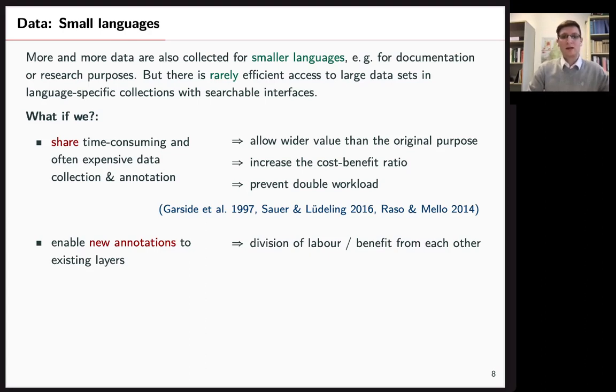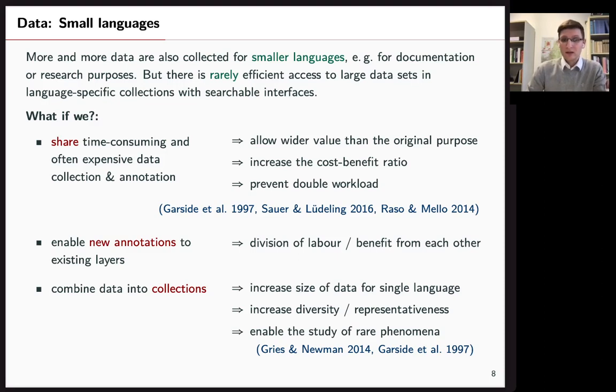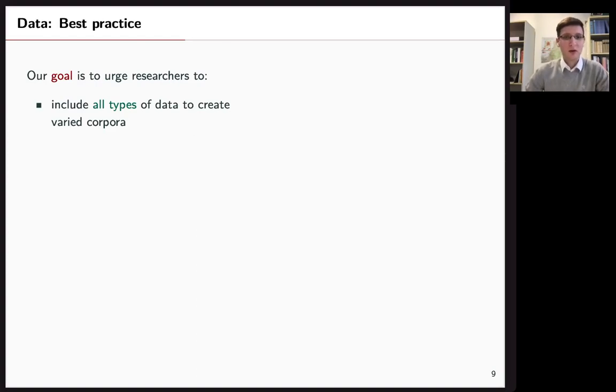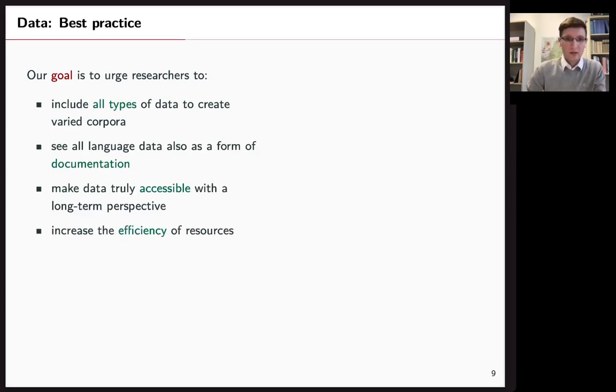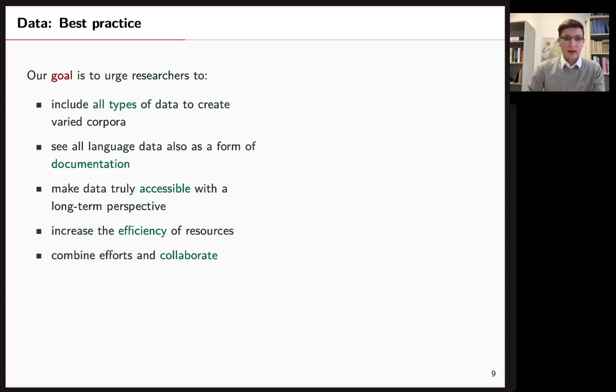If someone is interested in syntax they might add the syntactic layer. If someone else is interested in phonetics they might add this layer and together this corpus can really grow. And combining those into collections really getting together has the benefit of increasing the size for a single language, increase the diversity and the representativeness together with that. And only then can we really study rare phenomena because for smaller languages if we have a small corpus you will rarely find the phenomena that you don't see so often. So in general our goal is to urge researchers to include all types of data to create varied corpora, to see their corpora as documentation itself, make them accessible for long term and increase the efficiency of resources. By combining our efforts and collaborating this can really result in awesome corpora.